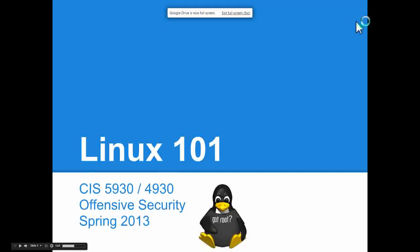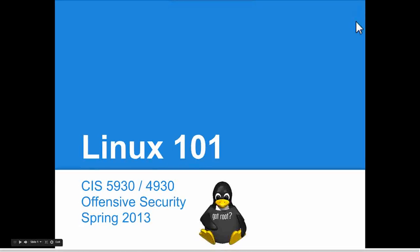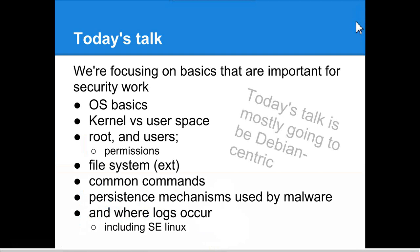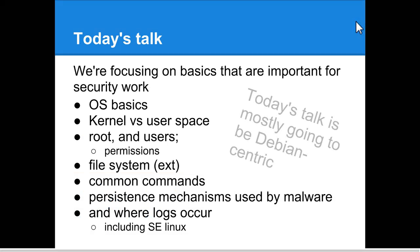You can view the lecture slides on the website and follow along if you'd like. Today's talk we're going to focus on the basics of an OS. If you're a master at Linux, you could probably leave the room. Some of the stuff I'm going to get to at the end covers ways that rootkits are installed in Linux systems. We're going to focus on kernel and user space, permissions, firewalls and IP tables, file system quirks and behavior, common commands for system administration and security, persistence mechanisms used by malware, and most importantly, logs.